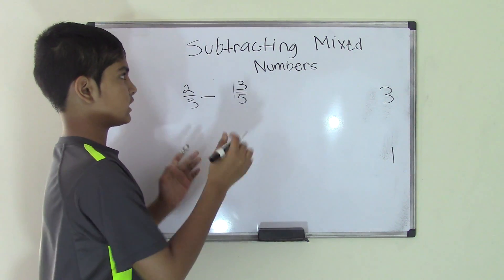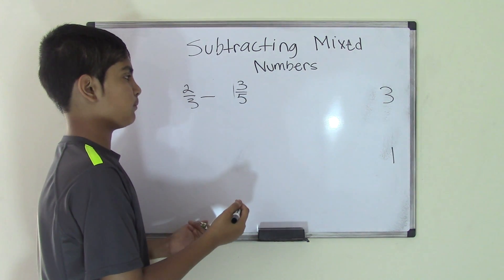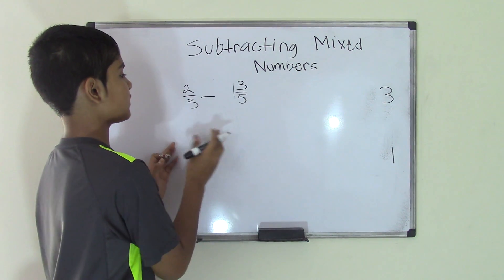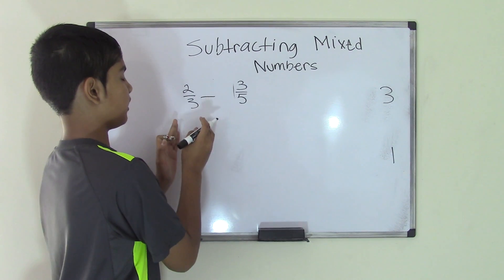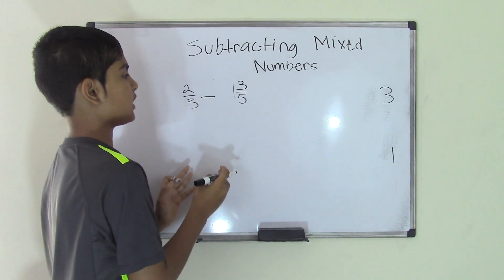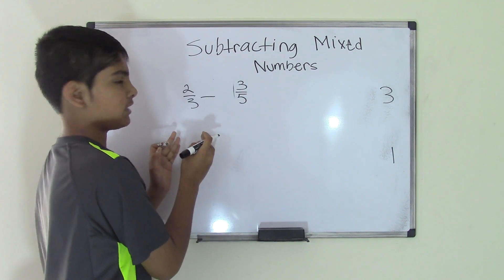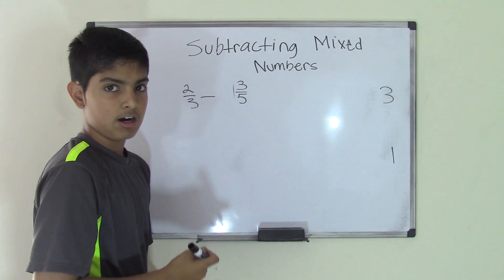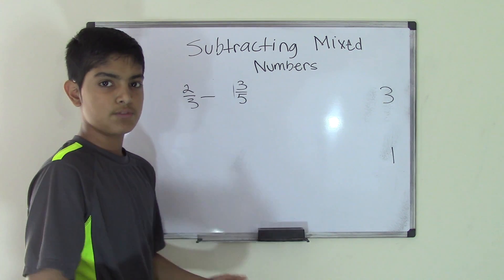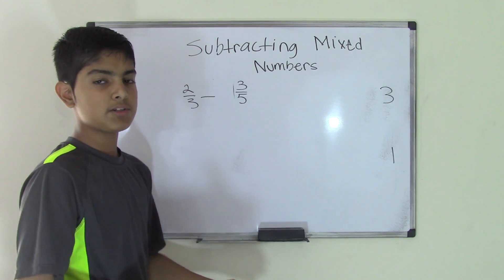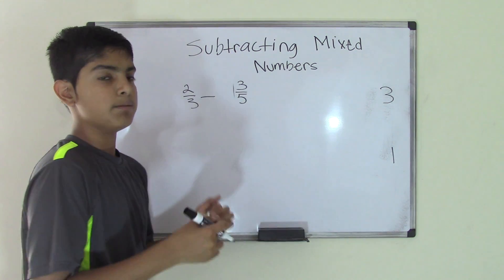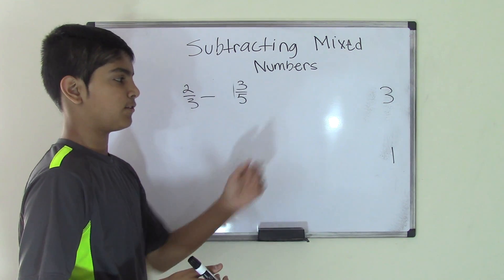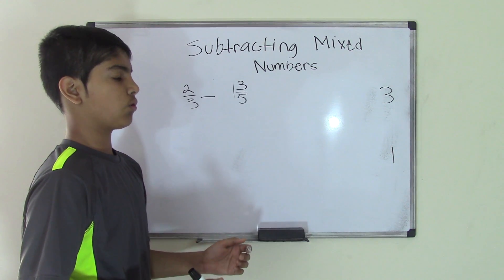To subtract the mixed numbers we will first have to make the fractions with common denominators. As you can see here, these two fractions do not have a common denominator, so we need to find the common denominators, make the right fractions, and then add back the whole numbers.